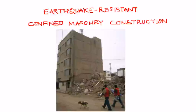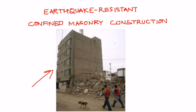My name is Svetlana Brzev and in this tutorial I am going to discuss earthquake resistant confined masonry construction. This photograph shows a confined masonry building which performed really well in the 2007 Pisco Peru earthquake, which was a magnitude 8. You can see that it is a G plus 4 building, and the neighboring buildings which were of unreinforced masonry and some reinforced concrete buildings collapsed.